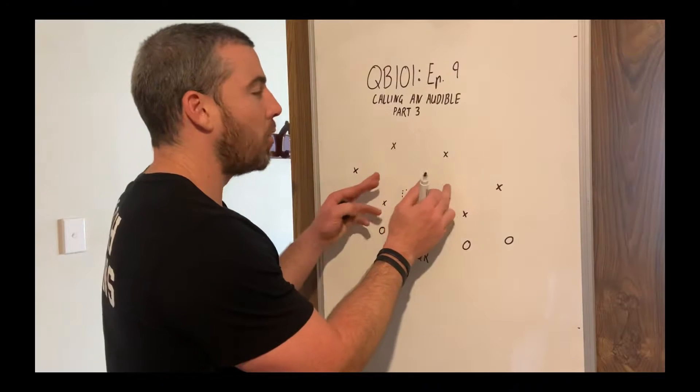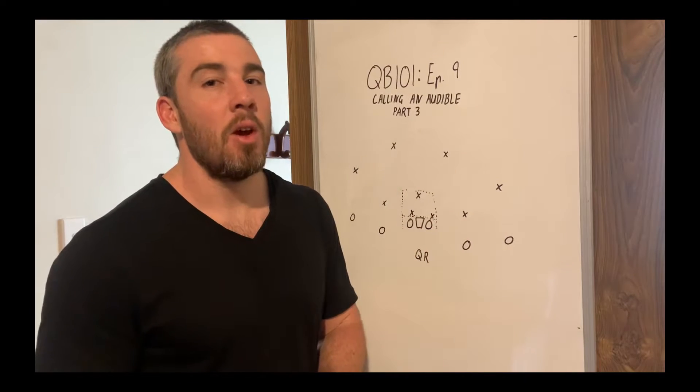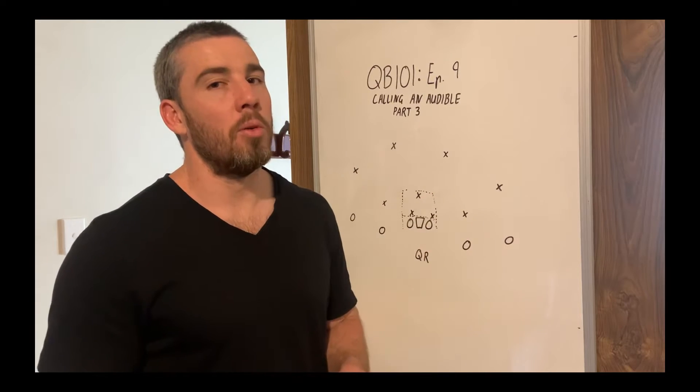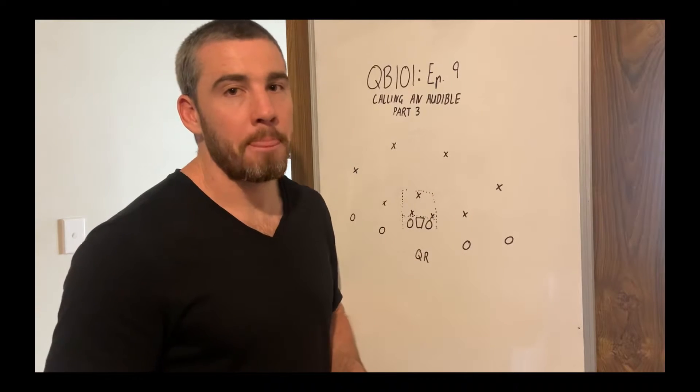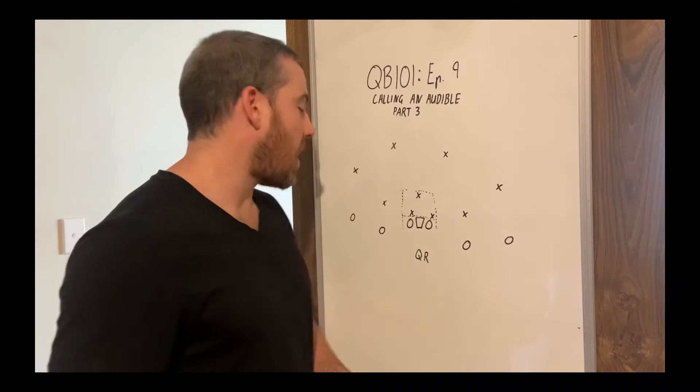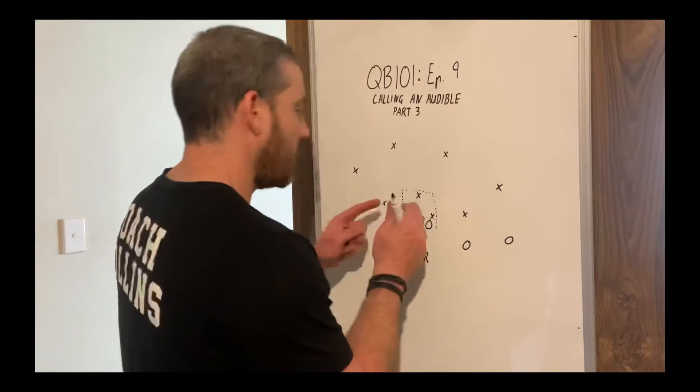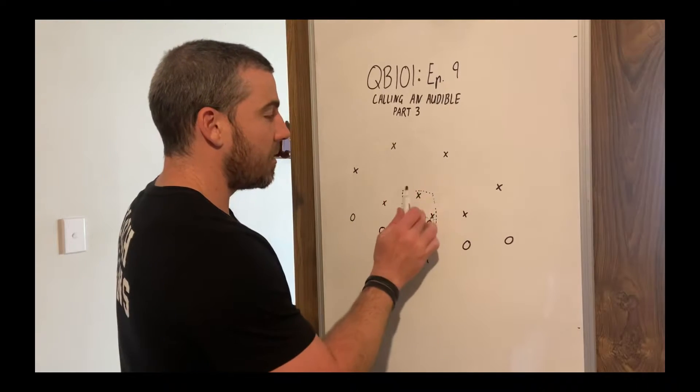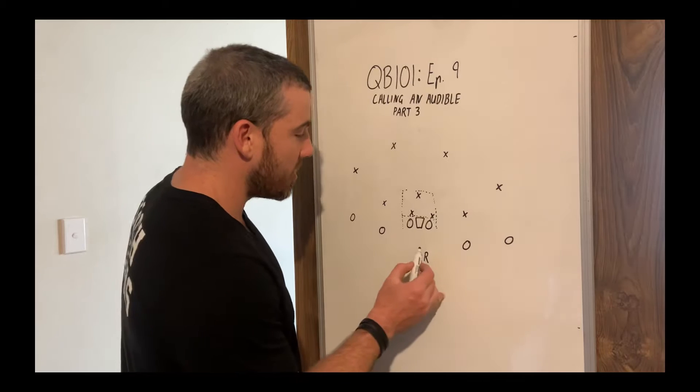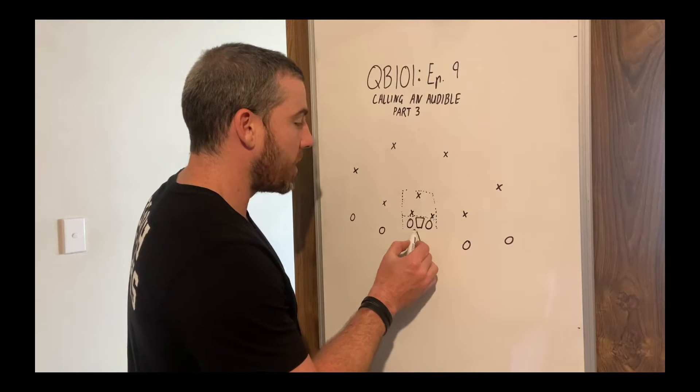So when it's very obvious that they are not defending the run, we should take the run. Now, keep in mind, they may only switch to this kind of defense when they know you have to throw the ball. If it is third and 20, you're going to have to throw the ball unless you have an absolute stud running back and an amazing offensive line. So if you see three people in the tackle box, we are running the ball.